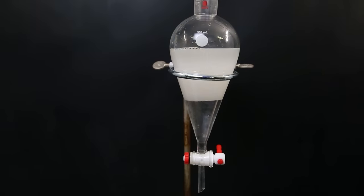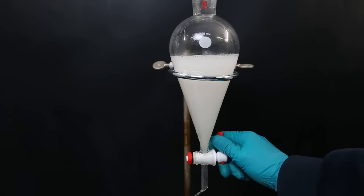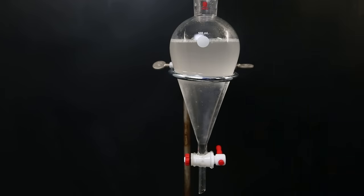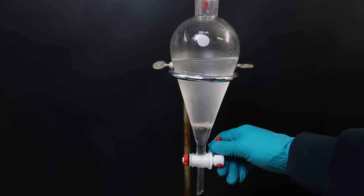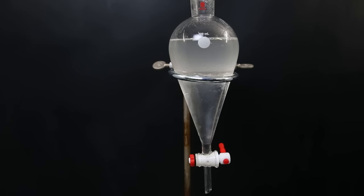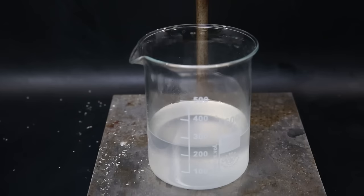I then poured the organic layer back into the separatory funnel and washed it once with water, once with a saturated sodium bicarbonate solution, and once with a saturated sodium chloride solution. I then take the washed organic layer and add a bunch of sodium sulfate to dry it.